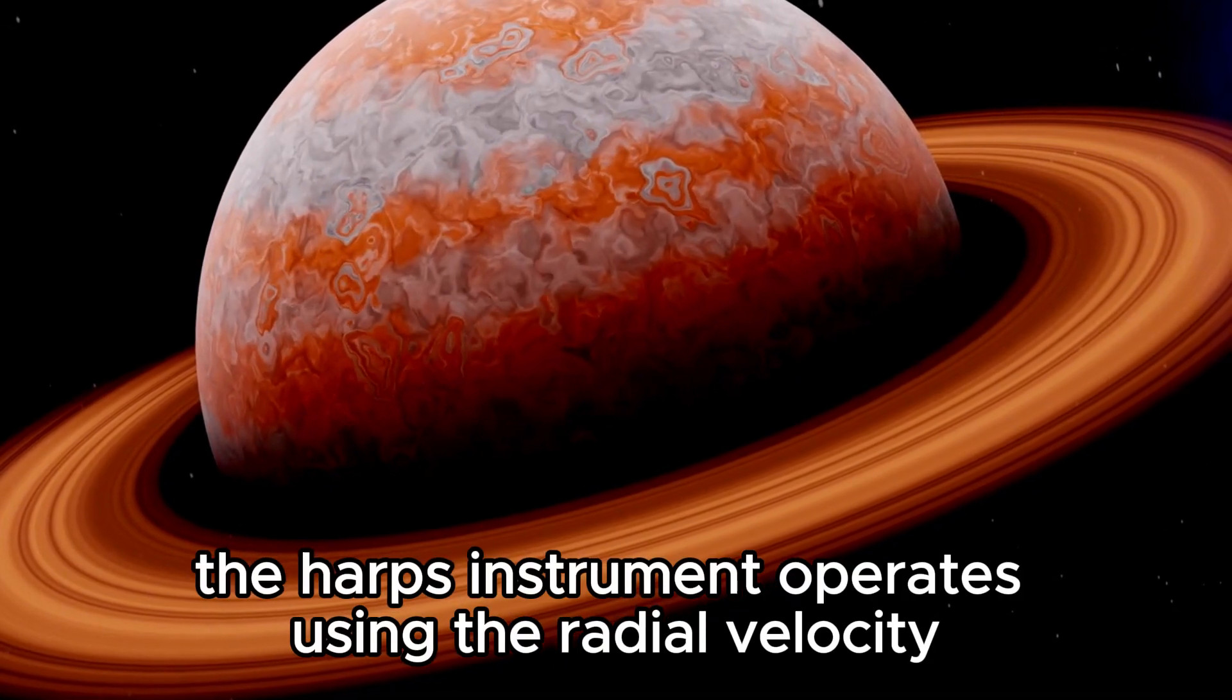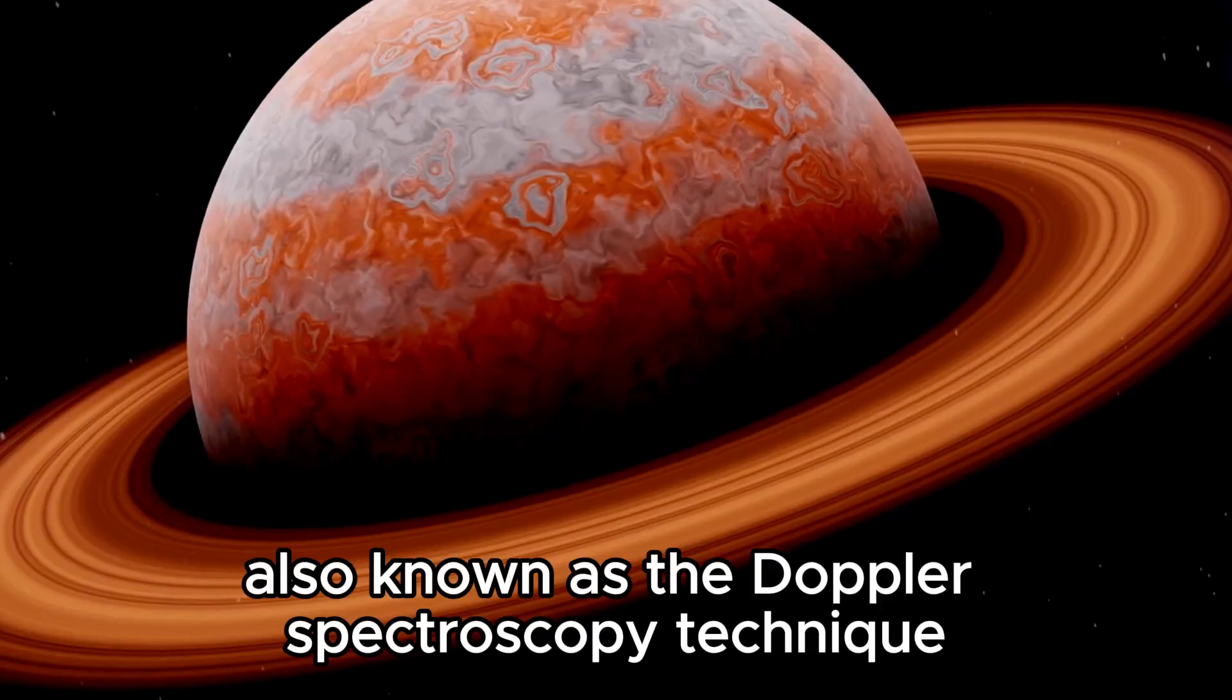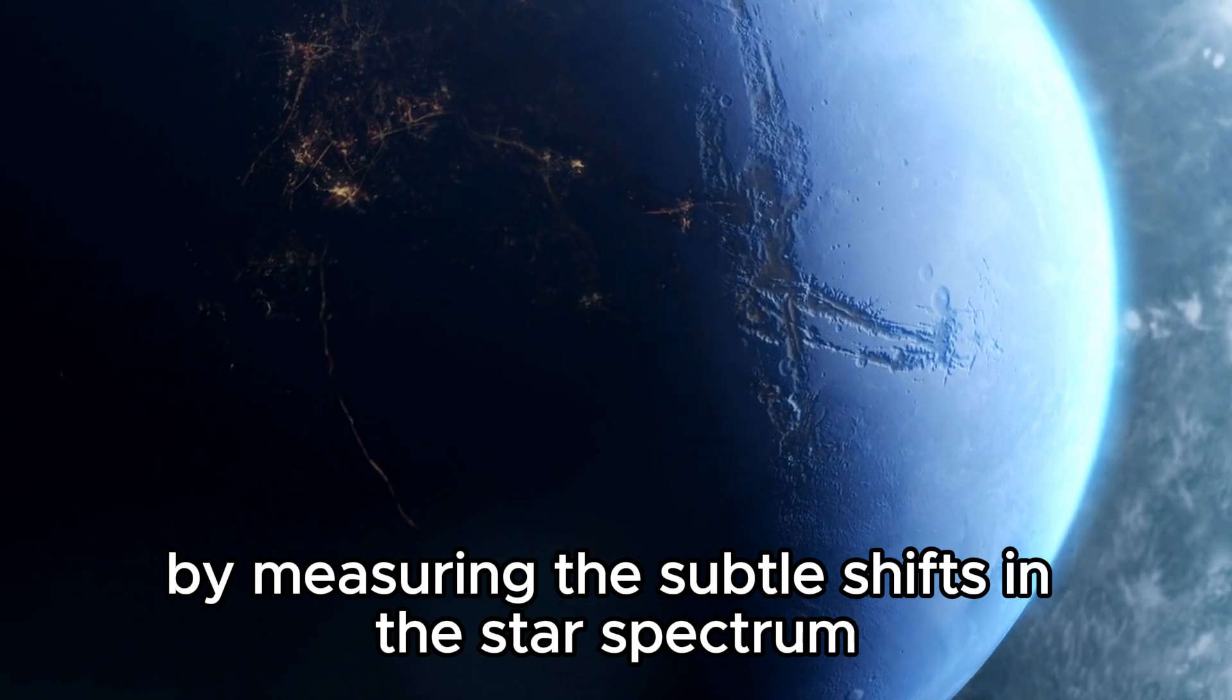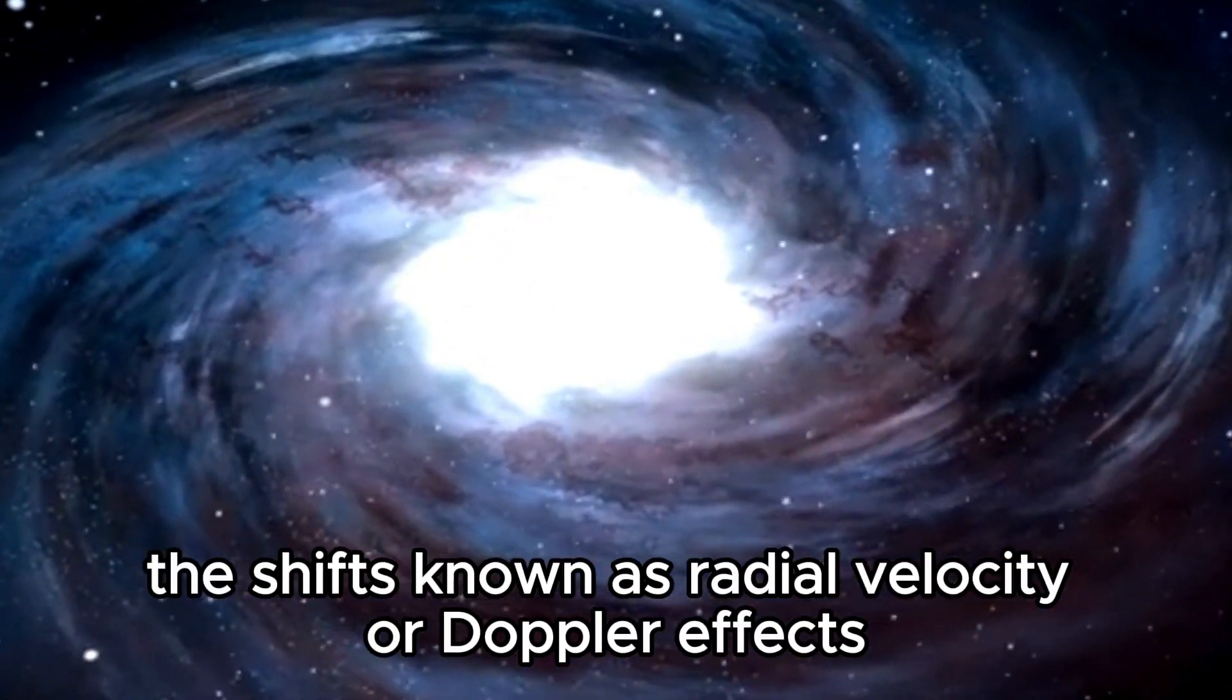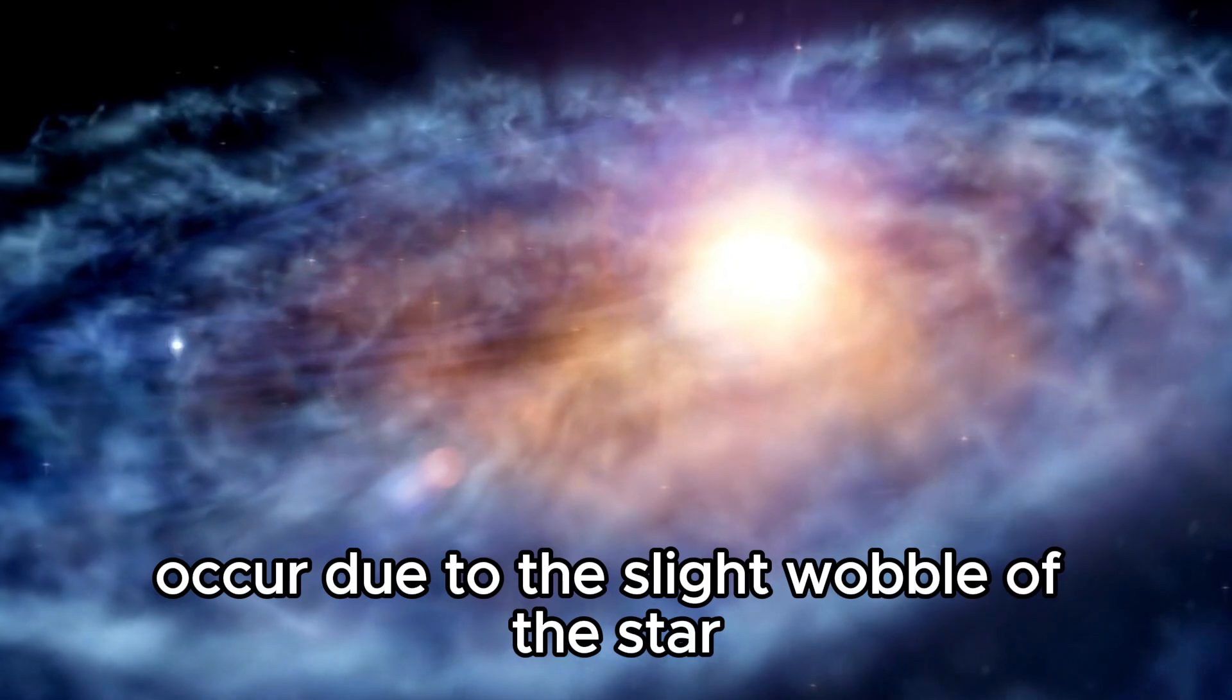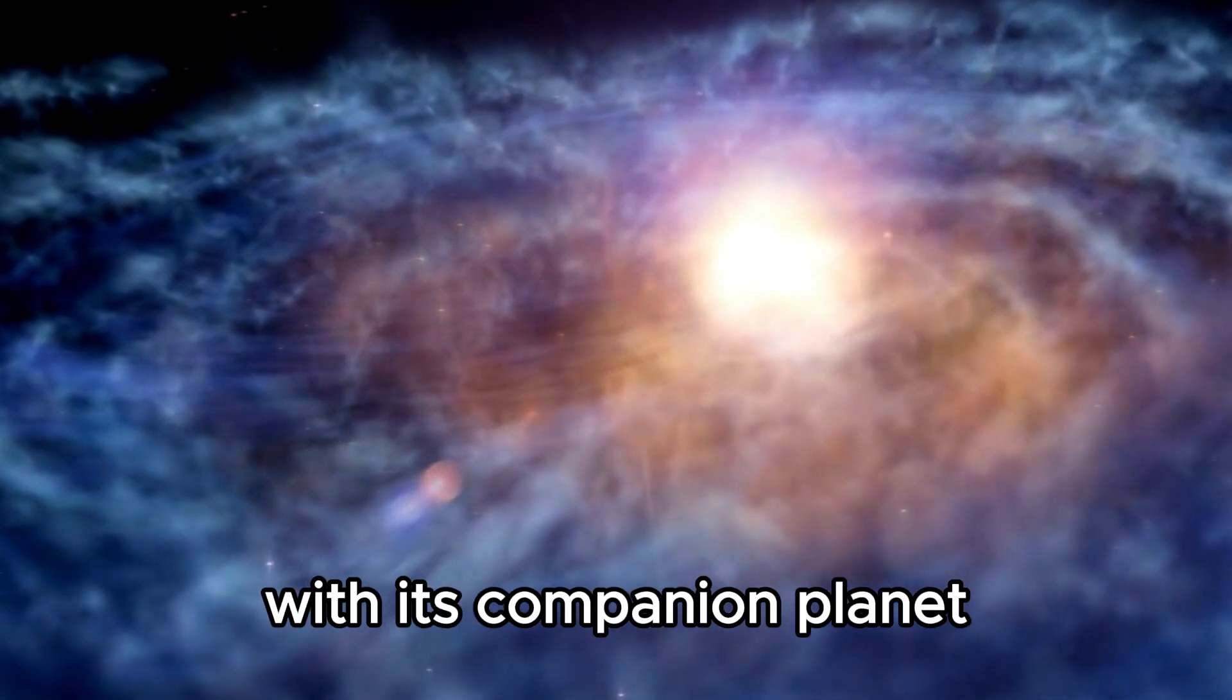The HARPS instrument operates using the radial velocity method, also known as the Doppler spectroscopy technique. Its function is to detect exoplanets by measuring the subtle shifts in the star spectrum caused by the gravitational pull of an orbiting planet. The shifts, known as radial velocity or Doppler effects, occur due to the slight wobble of the star as it is dragged by the gravitational interaction with its companion planet.